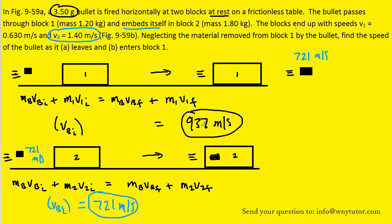And when we do that, we get approximately 937 meters per second. So just to clarify which answer goes with which part, part A asks for the speed of the bullet as it's leaving block 1.